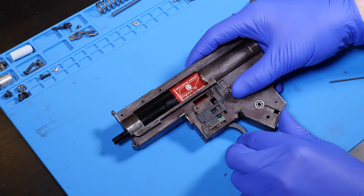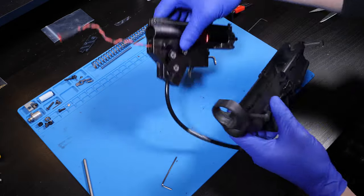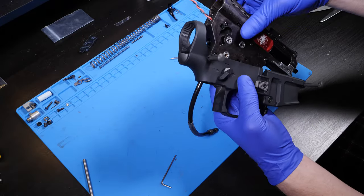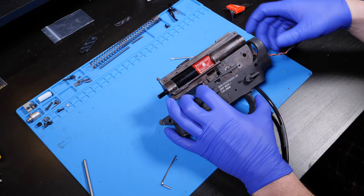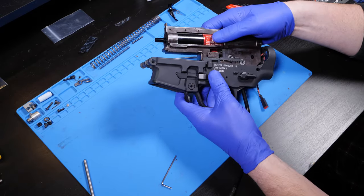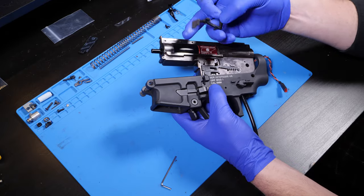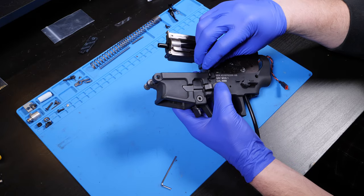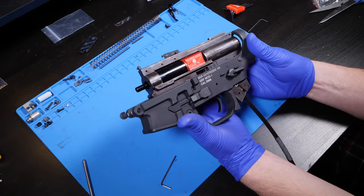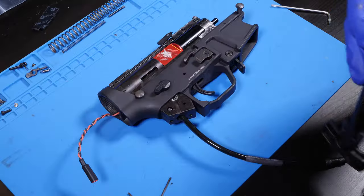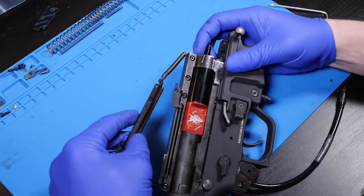To reinstall the gearbox into the body, drop the gearbox into the lower while routing the airline through the pistol grip and the wires out the rear, and make sure to drop the gearbox into place with the selector plate in safe, corresponding with the selector switch in safe on the lower receiver. If the bolt catch fell out during disassembly, just be sure to throw that in there before completely dropping in the gearbox. Snap the rear body pin back through to loosely secure the gearbox, and then I reinstall the charging handle on the top of the gearbox by connecting the spring, laying the charging handle in place, and then reinstalling the original charging handle screw.